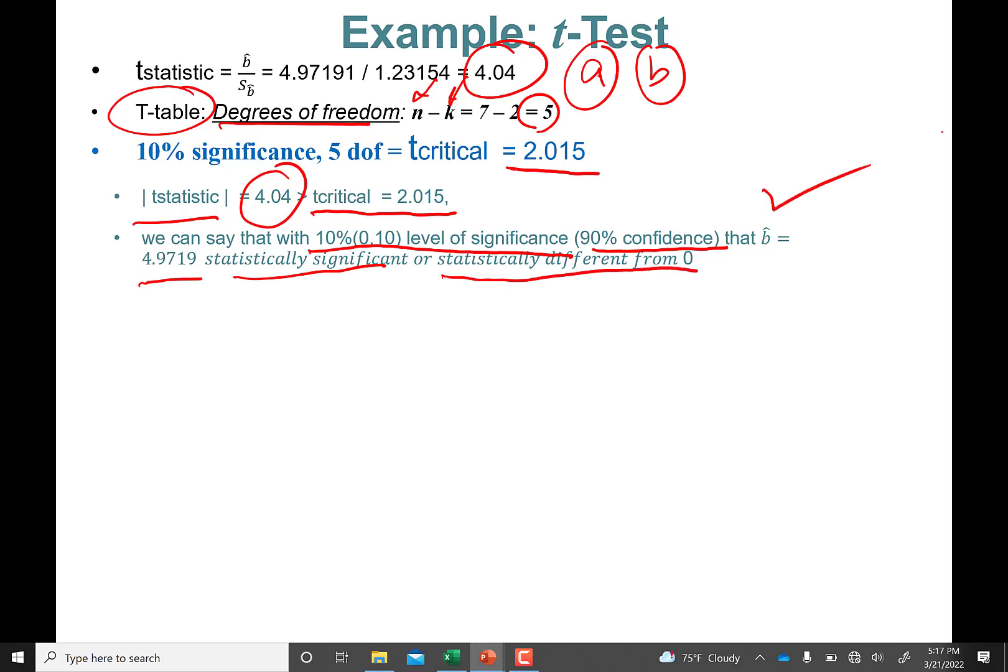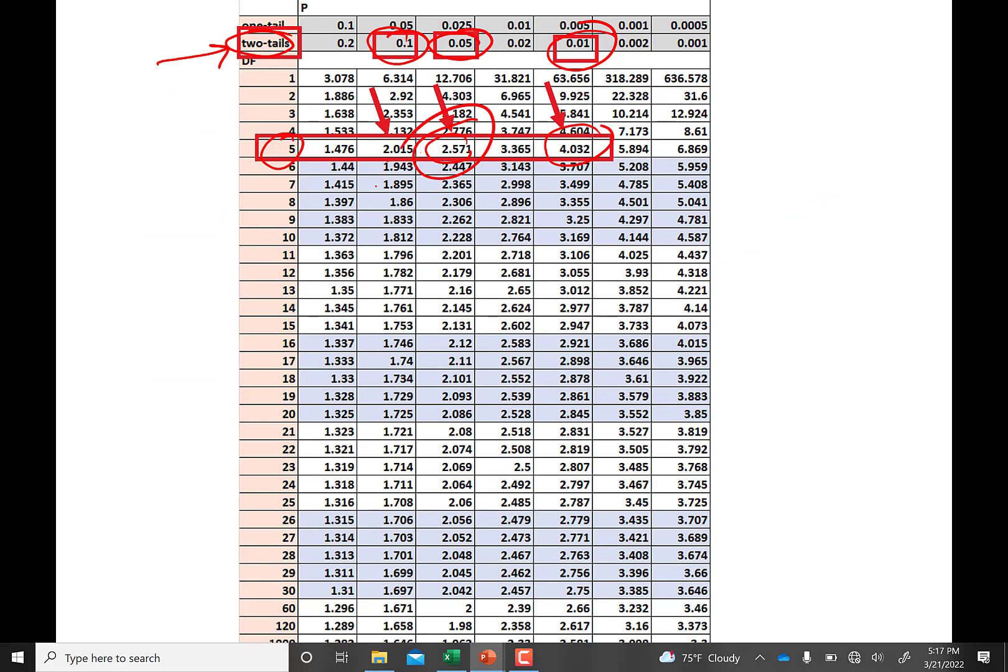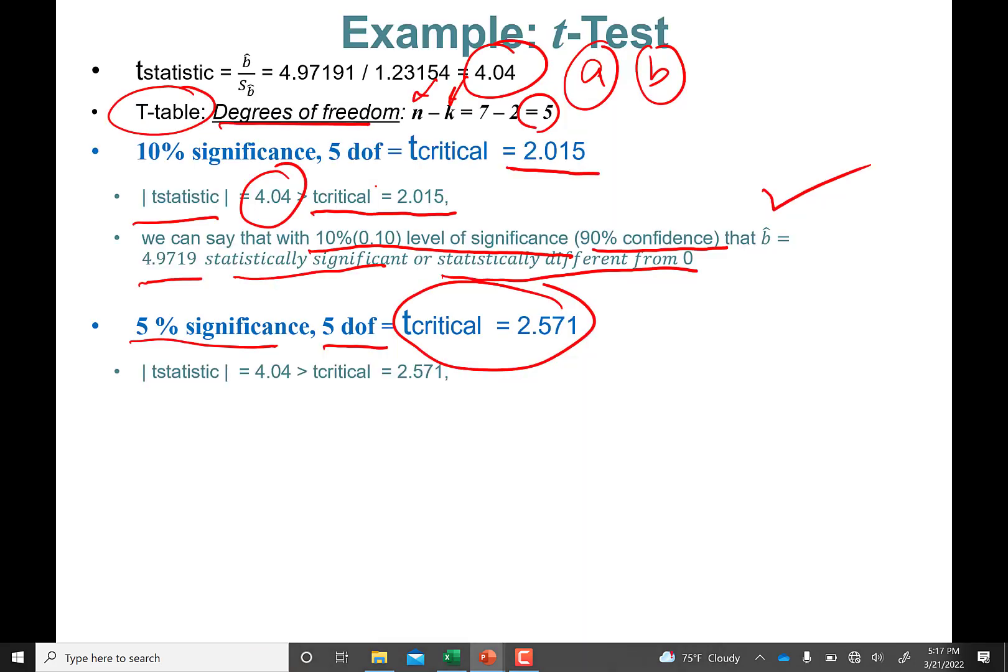Next we're going to test at the 5% level. Let's do this test. So 5% significance, 5 degrees of freedom: t-critical value from the previous table.